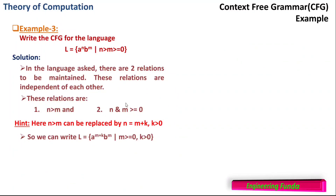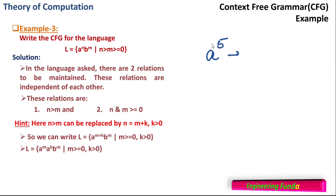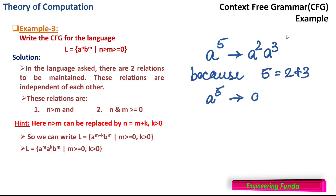Now these two conditions are getting independent: m ≥ 0 and k > 0. So I can rewrite this language as a^m · a^k · b^m. What we can do is: if there is a^(2+3), I can write it as a^2 followed by a^3 — that is, 2+3 = 5 occurrences of a, which is the same as 2 occurrences of a followed by 3 occurrences. Hence a^(m+k) can be written as a^m · a^k, and b^m remains as it is.